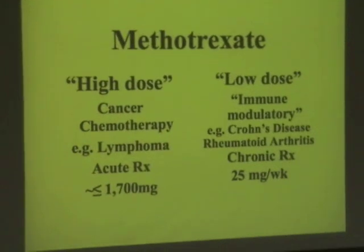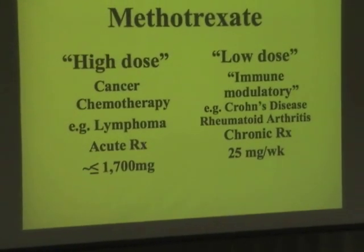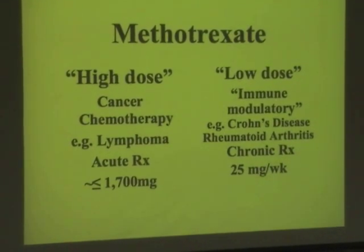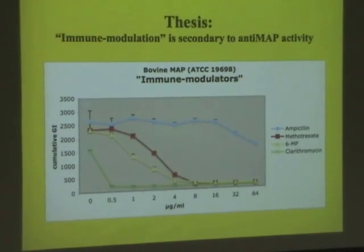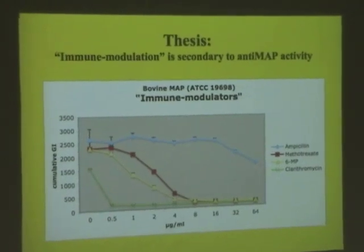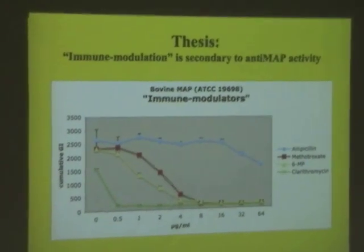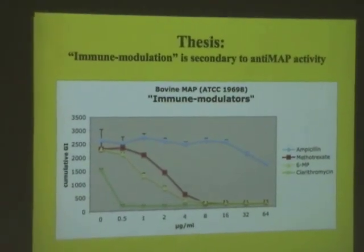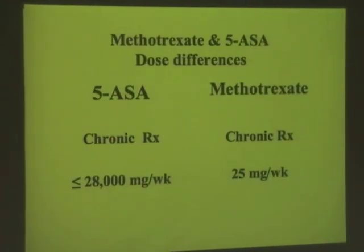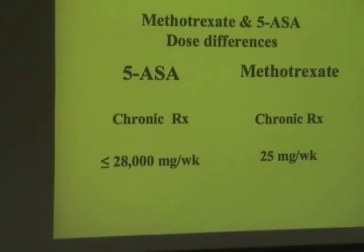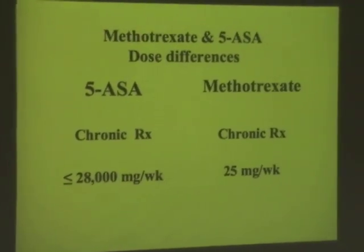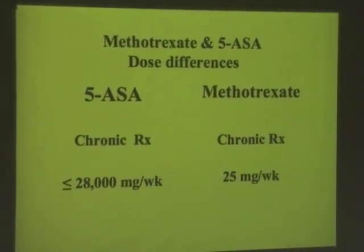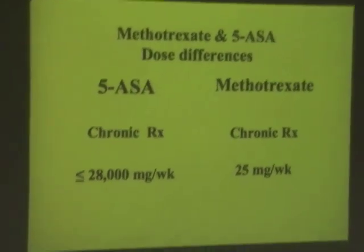Methotrexate is used in high doses to treat cancer and in low doses as an immune modulator to treat diseases such as Crohn's disease and rheumatoid arthritis. The red line is methotrexate and the white line is 6MP. The Collins lab has replicated these data with 6MP and its precursor azathioprine. There is a major difference in susceptibility in the lab, and this mirrors what happens clinically. 5-ASA is used at a dose of 28,000 mg per week and methotrexate at 25 mg per week.